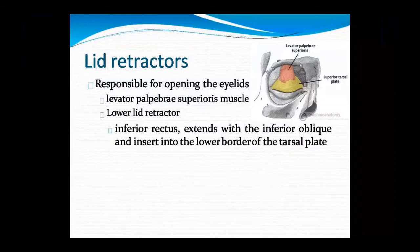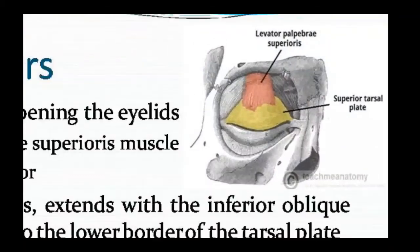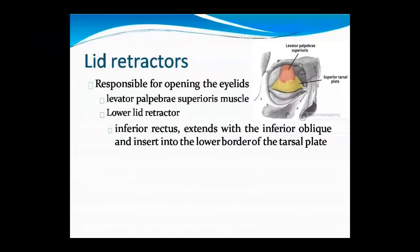The inferior rectus inserts into the lower border of the tarsal plate. The levator palpebrae superioris is the upper lid retractor. These two structures are shown in the diagram. We are studying the eye.